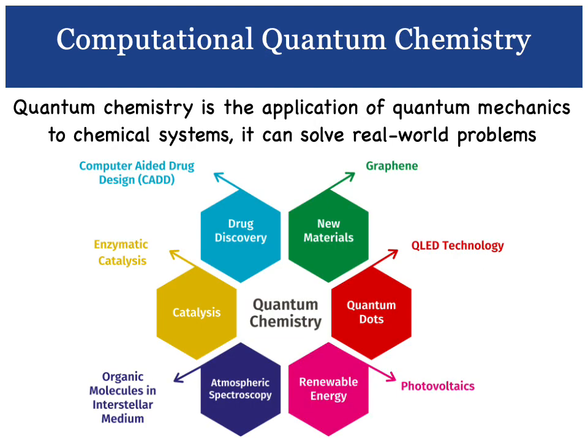Now, quantum chemistry is simply the application of quantum mechanics to chemical systems. It can be used to solve many, many different real-world problems, and here are just a few from the recent literature.